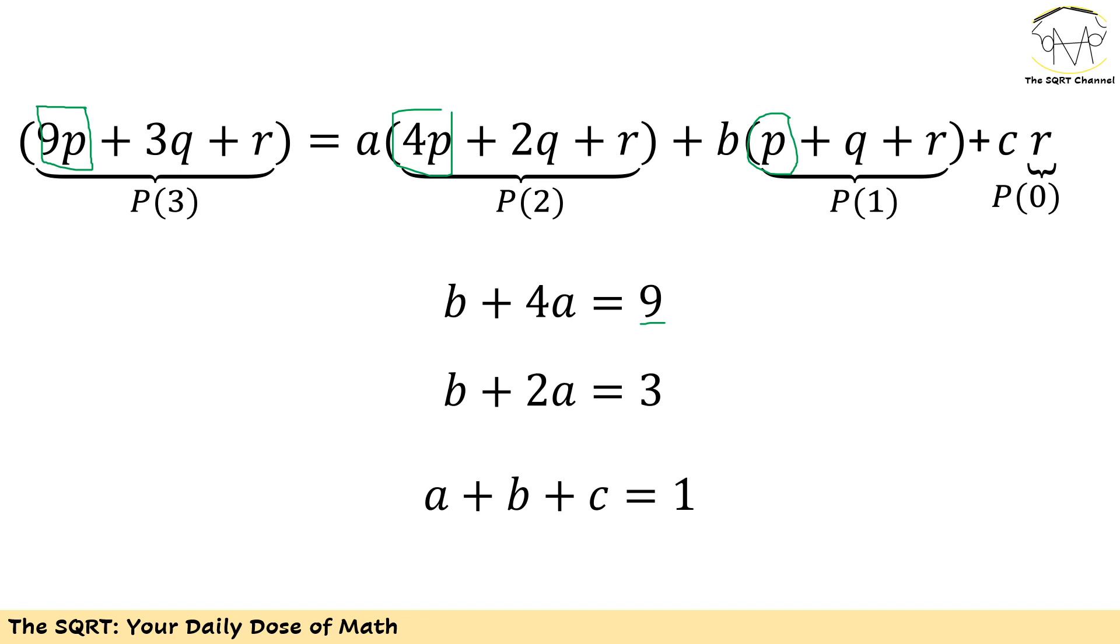For q, I have 3 on the left hand side but on the right hand side I have (2A + B). For r, I have 1 times r on the left hand side but I have (A + B + C). This gives us the system: b + 4a = 9, b + 2a = 3, a + b + c = 1.